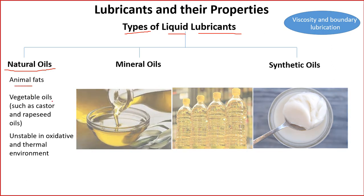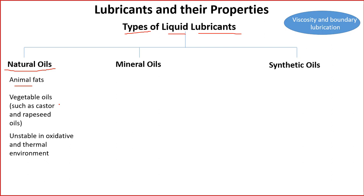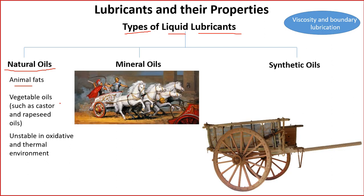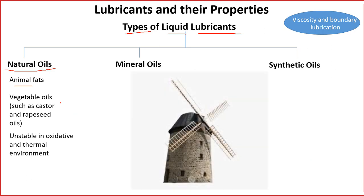Animal fats and vegetable oils were used in very ancient times for machines such as chariots, wheel carts, potter's wheels, and windmills. These rotating machines used different types of natural oils, animal fats, or vegetable oils, which were the main lubricants available. In those times, mineral oils and synthetic oils were not available.